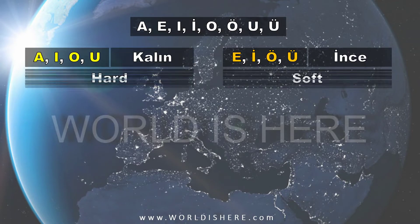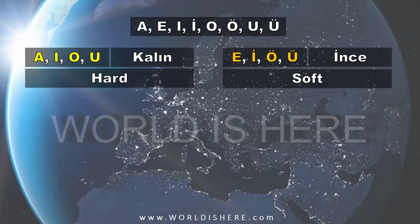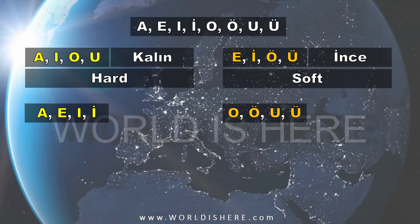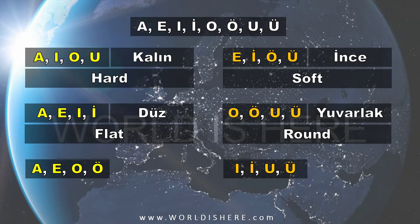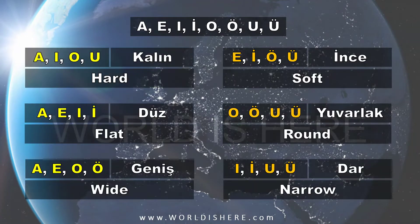We already know there are eight vowels in Turkish and two groups — kalın and ince. But after that we saw a different classification too, making two more groups. The vowels A, E, I, İ, O, Ö, U, Ü can be divided into düz ünlüler (flat vowels) and yuvarlak ünlüler (rounded vowels), and also into geniş ünlüler (wide vowels) and dar ünlüler (narrow vowels). Remember?